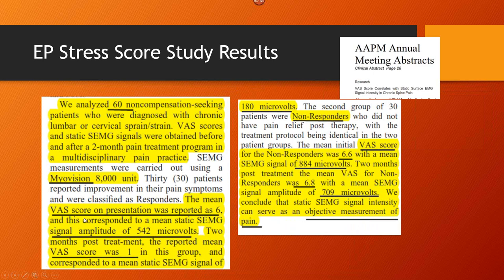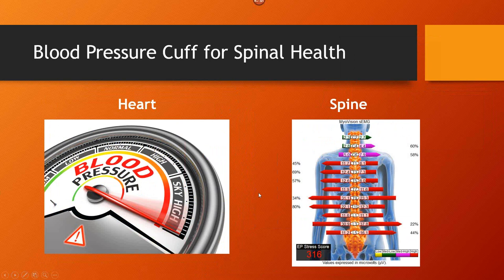They used the MyoVision in this study. One way to look at the EP Stress Score is as a blood pressure cuff for spinal health. Blood pressure changes up and down based on all kinds of things — same with static EMG. It's going to vary the same way blood pressure does, so you'll see changes over time. But overall, if there are positive changes in spinal health, you'll see the overall result change in a positive way, which is a decrease in activity.